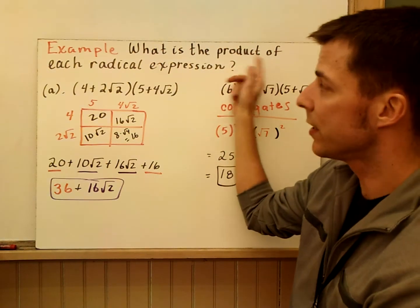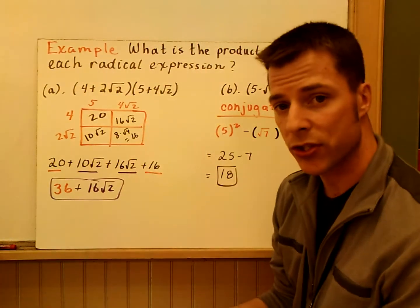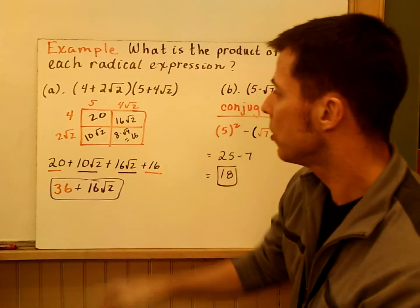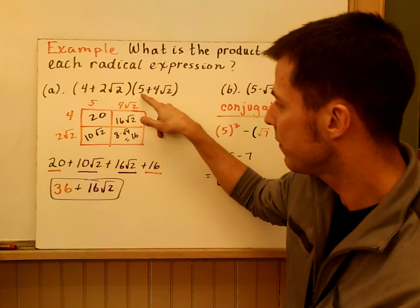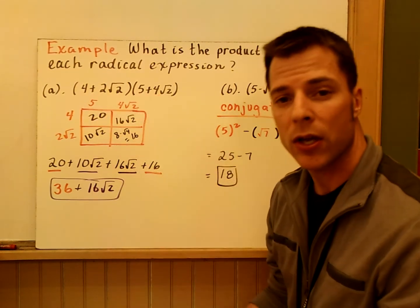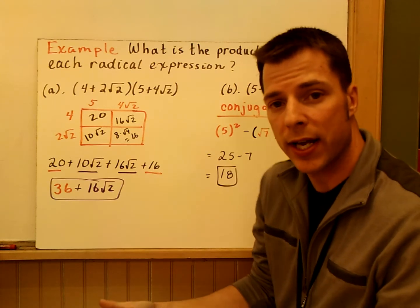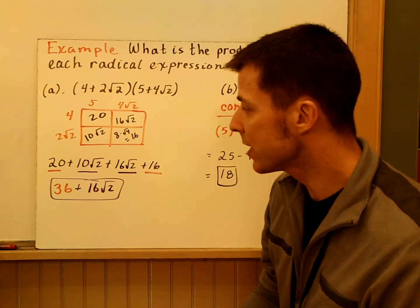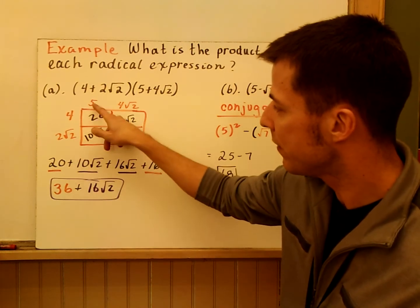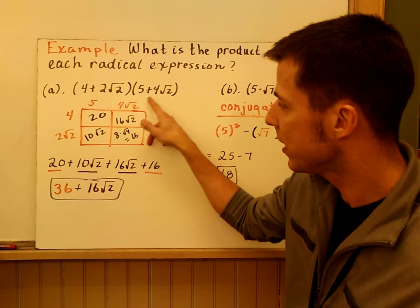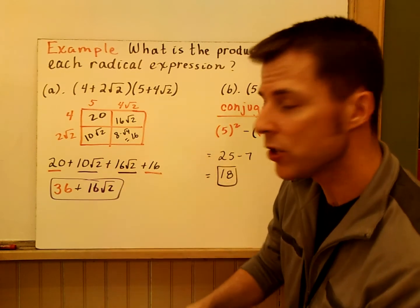Now, what is the product of each radical expression? So this is the only new thing. So we have 4 plus 2 root 2 times the quantity 5 plus 4 root 2. Well, these are 2 binomials. So we're going to actually just use the box method. So I have 4 root 2 on one side and 5 and 4 root 2 on the other side. And I take the area of each box.